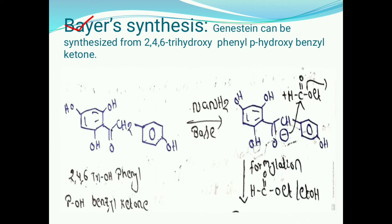In Bayer's synthesis method, genistein can be synthesized from 2,4,6-trihydroxyphenyl-parahydroxybenzyl ketone. This is the structure of 2,4,6-trihydroxyphenyl-parahydroxybenzyl ketone. This is treated with sodamide.